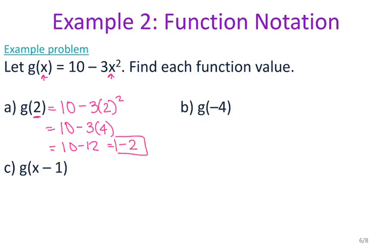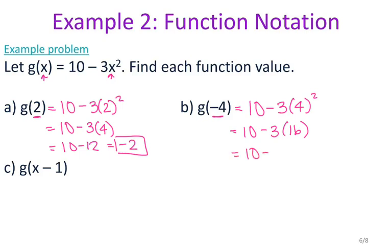For letter b, my input is negative 4, so I have 10 minus 3 times negative 4 squared. That is 10 minus 3 times 16; 3 times 16 is 48, so that gives me negative 38. When your input is a number it's pretty simple — just plug it in for that variable.